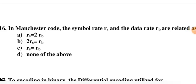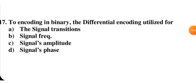In Manchester code, the symbol rate Rs and the data rate Rb are related by which formula? B is the correct answer for this question. This is a memory-type question — you need to remember the formula or property. The formula Rs = 2Rb applies here.